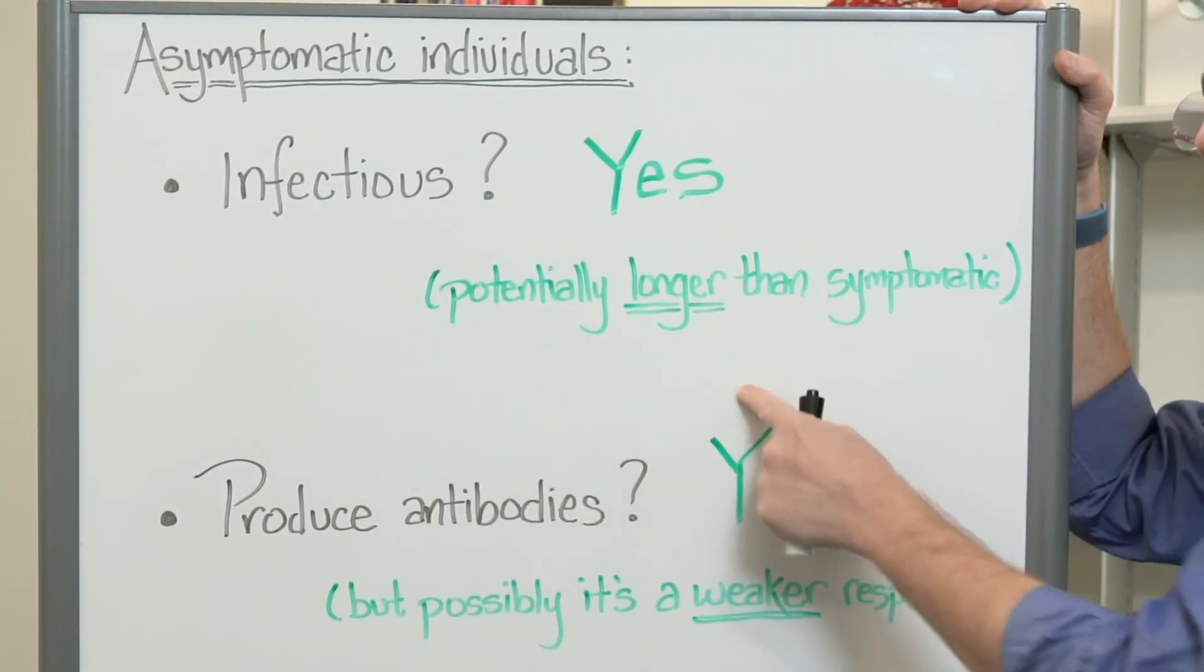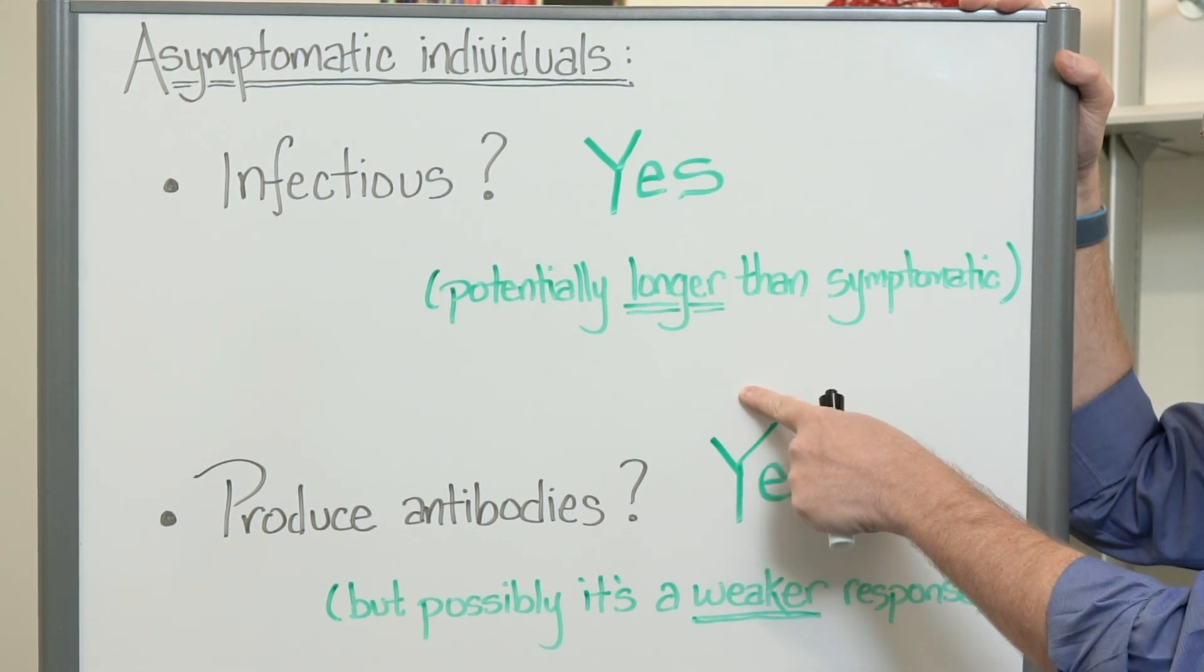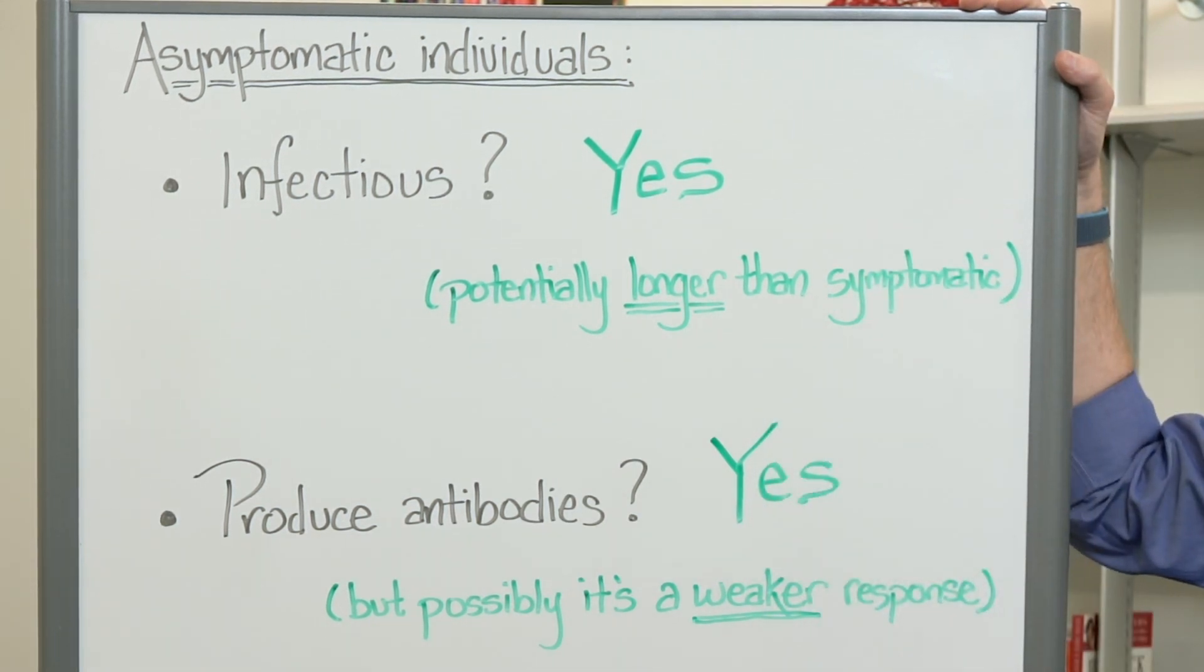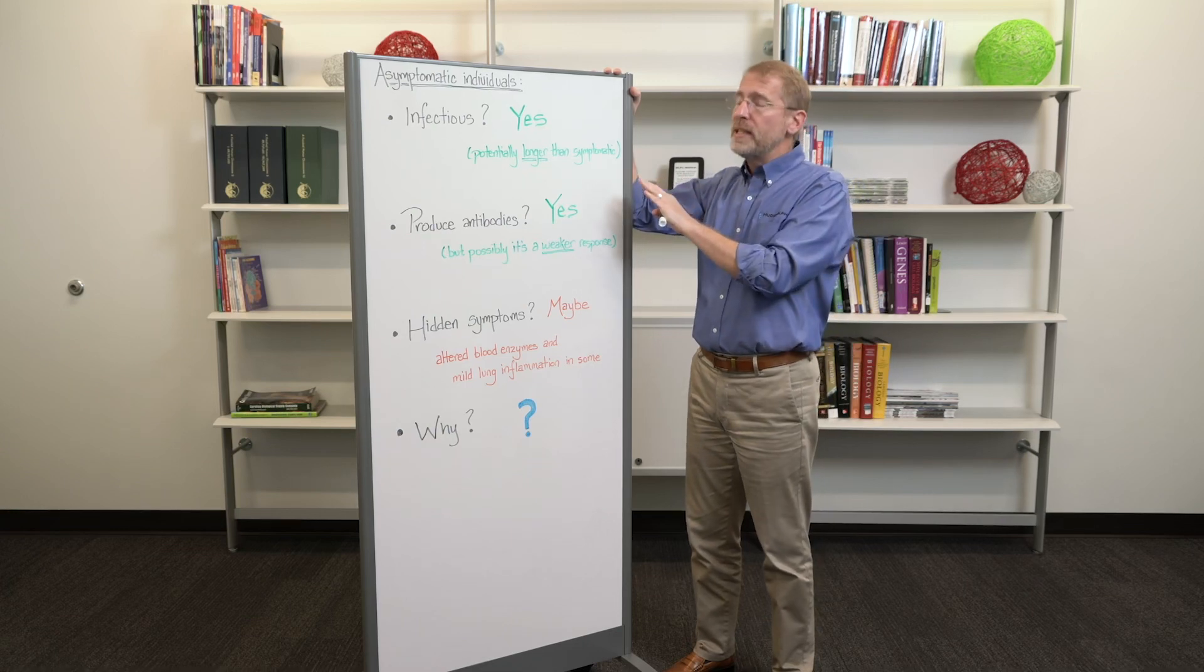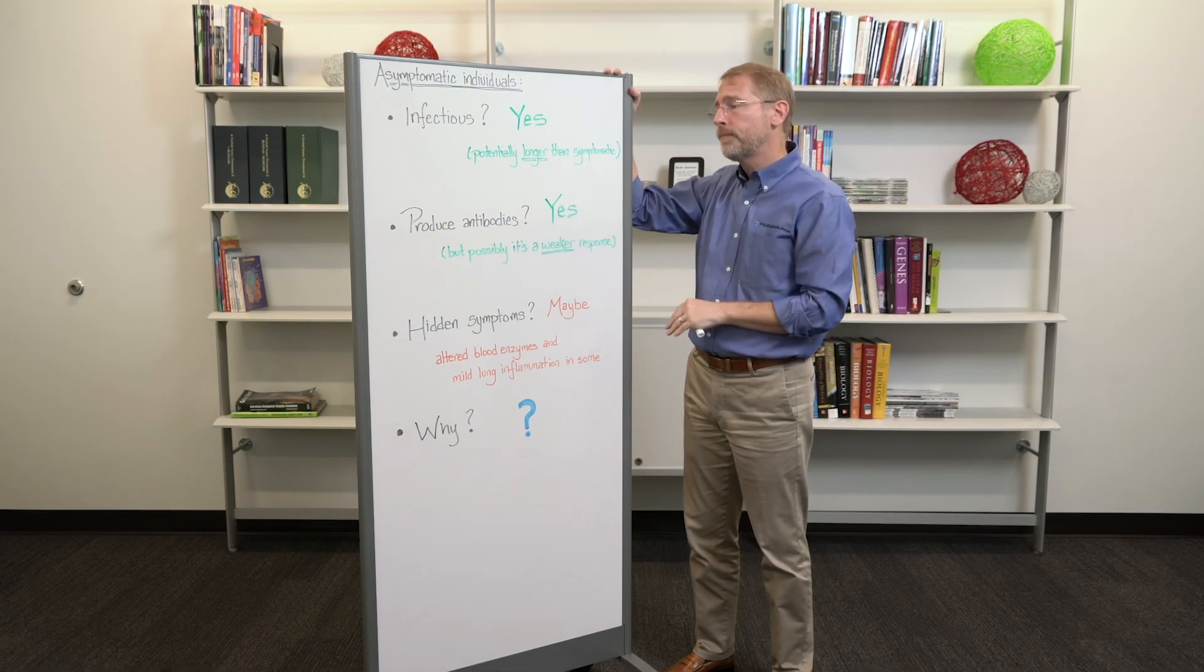There's some data that suggests that asymptomatic people might be infectious even longer than symptomatic individuals. It's a small study. We need some additional data, but I just want to put it out there.